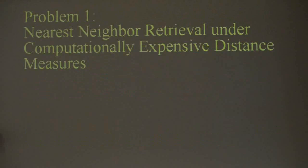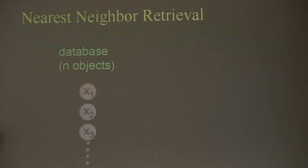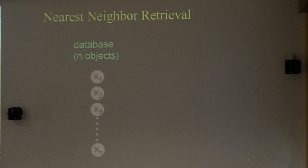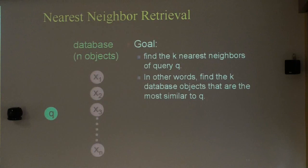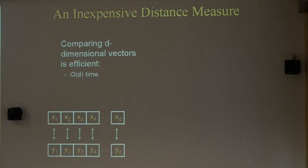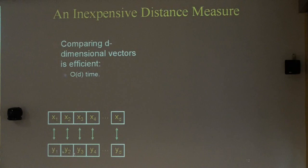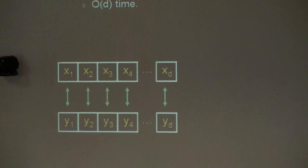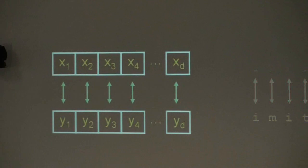Starting with the first problem — nearest neighbor retrieval under computationally expensive distance measures. The setup is traditional: you have a database of objects such as images, time series, or strings, and a query object, and you want to find the k most similar objects. Our focus is on computationally expensive distance measures. It's easiest to explain by first defining what is not expensive. For Euclidean distance over d-dimensional vectors, it takes O(d) time — linear in the number of dimensions, which we consider cheap.